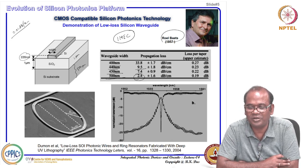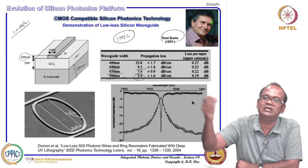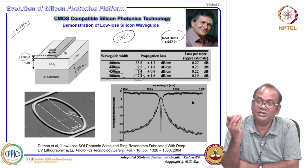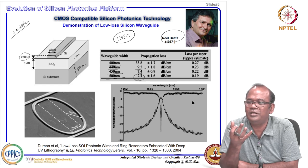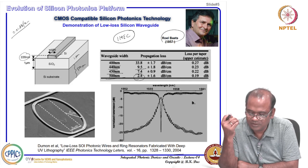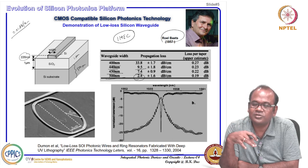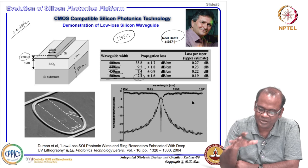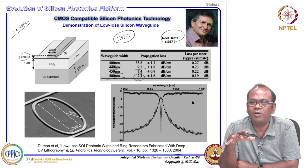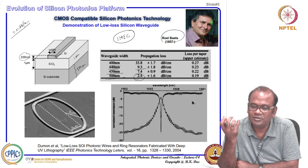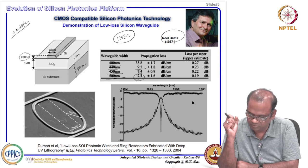Compared to optical fiber this is relatively higher loss, but optical fiber is used for thousands of kilometers of communication. For on-chip optical interconnect, you only need a few hundred microns — at most a millimeter or so — so this loss is tolerable. This was the first low-loss silicon-on-insulator waveguide, promising practical device demonstrations.